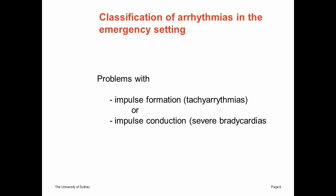In the emergency setting, it's also good to use pattern recognition. Ask yourself first: do I have a problem with impulse formation or a problem with impulse conduction? Problems with impulse formation generally cause tachyarrhythmias — extra impulses. Problems with impulse conduction cause bundle branch blocks, and most importantly, severe bradycardias. The first quick question is: are we dealing with a tachyarrhythmia or a bradycardia — a problem with impulse formation, or blocks and impulse conduction problems?